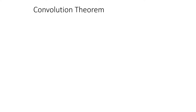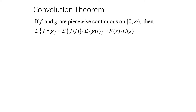Now, the convolution theorem states that if f and g are piecewise continuous on the interval from 0 to infinity, then the Laplace transform of the convolution of f with g, f star g, will be the Laplace transform of f times the Laplace transform of g, or big F of s times big G of s.